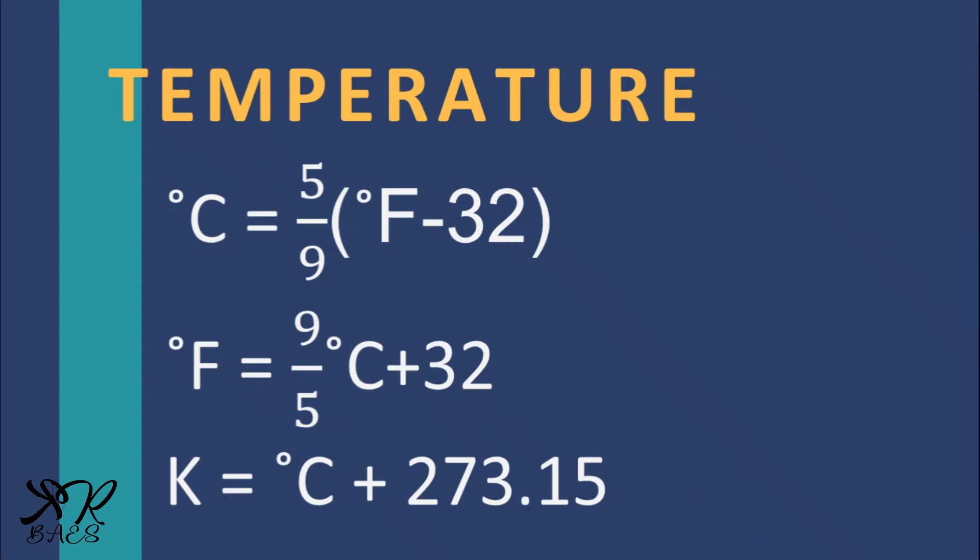To convert Fahrenheit to Celsius, we use the formula degrees Celsius is equal to 5 over 9 times the quantity of degrees Fahrenheit minus 32. To convert Celsius into Fahrenheit, we use the equation degree Fahrenheit is equivalent to 9 over 5 times Celsius plus 32.